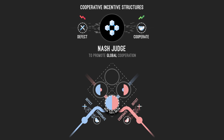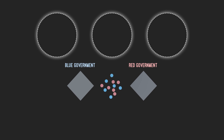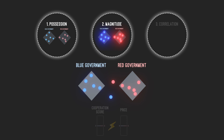Let's explore a hypothetical world with only two governments: the blue government and the red government. To establish a cooperative incentive structure, government tokens should have three properties. The first is possession: governments should have a large possession of their respective tokens — the blue government owns blue tokens, the red government owns red tokens. The second is magnitude: the value of such tokens should be significant enough to have an influence over the decision-making of governments. The third is correlation: there should exist a positive correlation between the value of tokens and the ability of the respective governments to cooperate. If the red government is more cooperative, the price of red tokens should be higher.